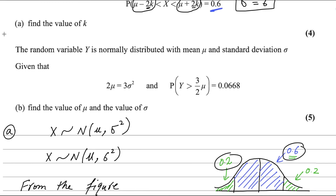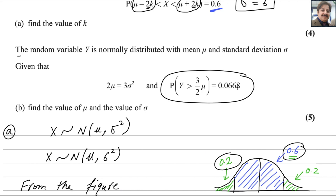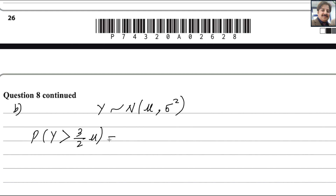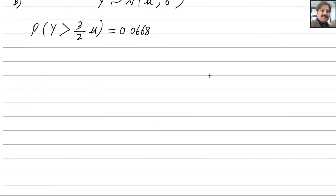Now for the second part: the random variable Y is normally distributed with mean mu and standard deviation sigma. Given that 2mu equals 3 sigma squared, and the probability of Y greater than 3 over 2 mu equals 0.0668, find the values of mu and sigma. We start with P(Y > 3/2 mu) = 0.0668. Y ~ N(mu, sigma squared).